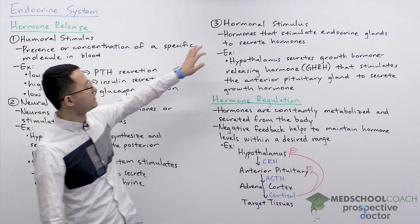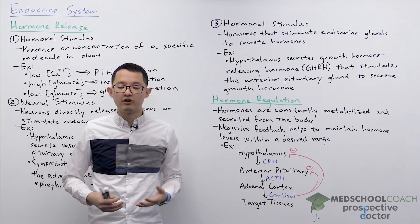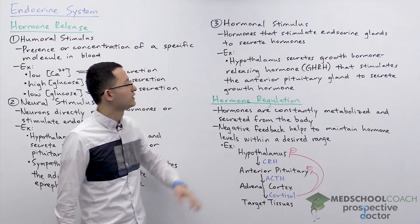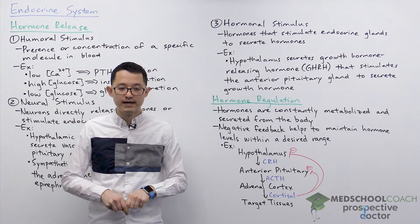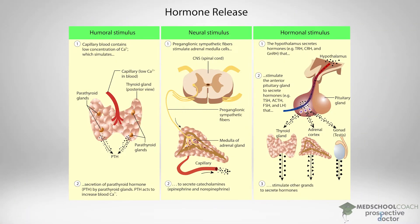A third way of releasing hormones is through a hormonal stimulus. In this case we're looking at what are called tropic hormones, which stimulate endocrine glands to secrete hormones. For example, the hypothalamus releases corticotropin releasing hormone (CRH). CRH acts on the anterior pituitary gland to release adrenocorticotropic hormone (ACTH). ACTH will then act on the adrenal cortex to secrete cortisol. Both CRH and ACTH are tropic hormones that stimulate other endocrine glands to release hormones.